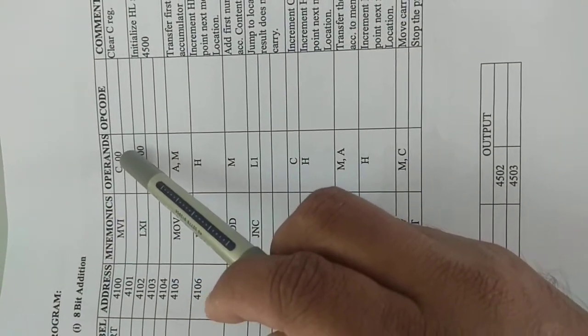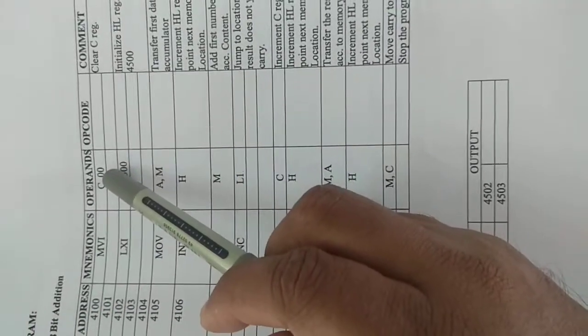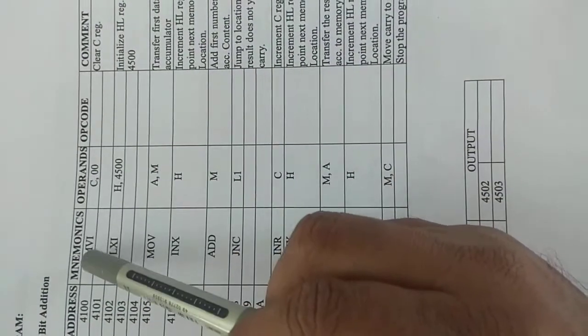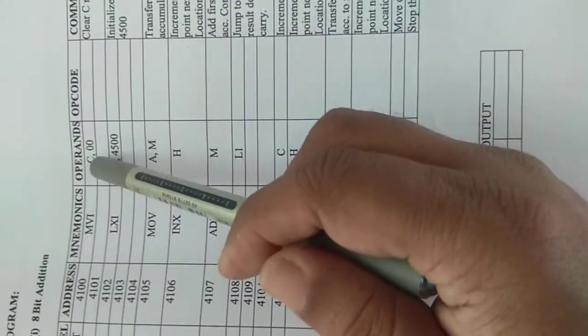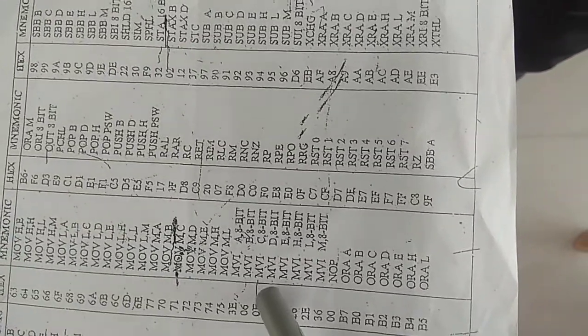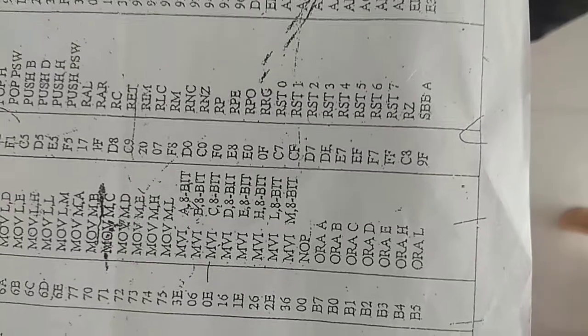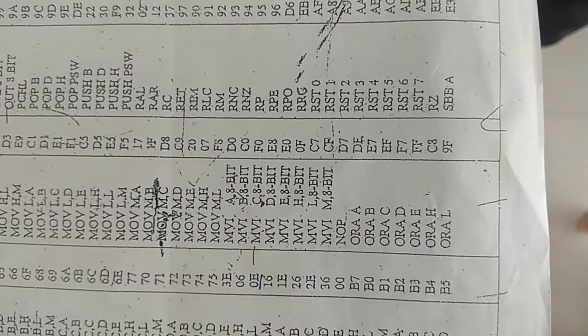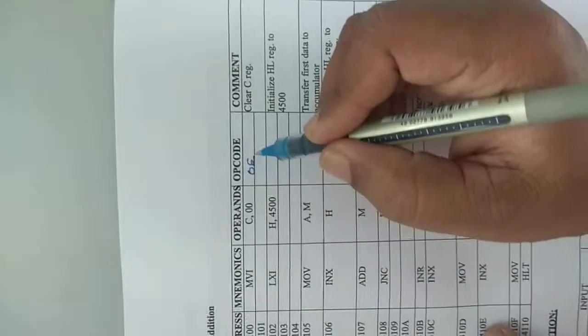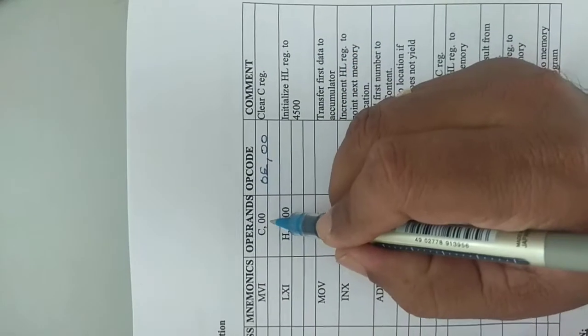00 is an 8-bit data specified in the instruction itself. We have to find out the opcode for MVI C. In the opcode sheet, which is alphabetical, we locate MVI C. The equivalent opcode for MVI C is 0E. So we write 0E for MVI C, then 00 as the operand.